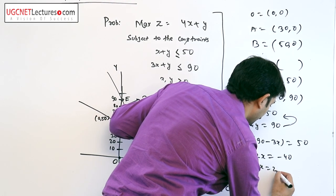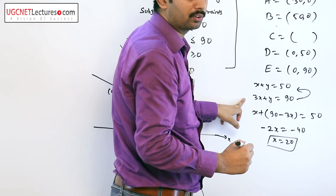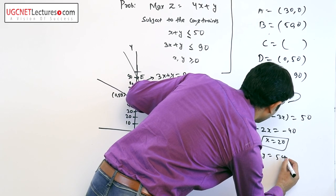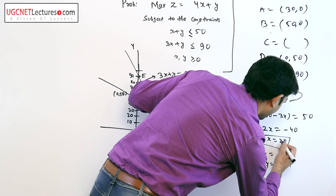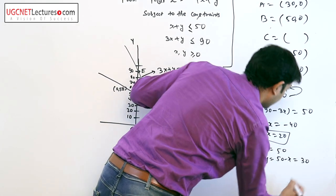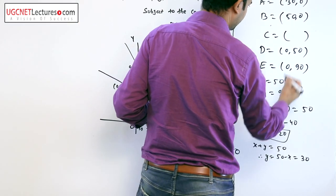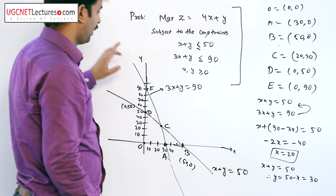Since x is 20, if we put the value of x in any equation, we get y. From x plus y equals 50, we have y equals 50 minus x. Since x is 20, y is 30. So the coordinate of C is (20, 30). What we are doing is evaluating the extreme points of the graph.